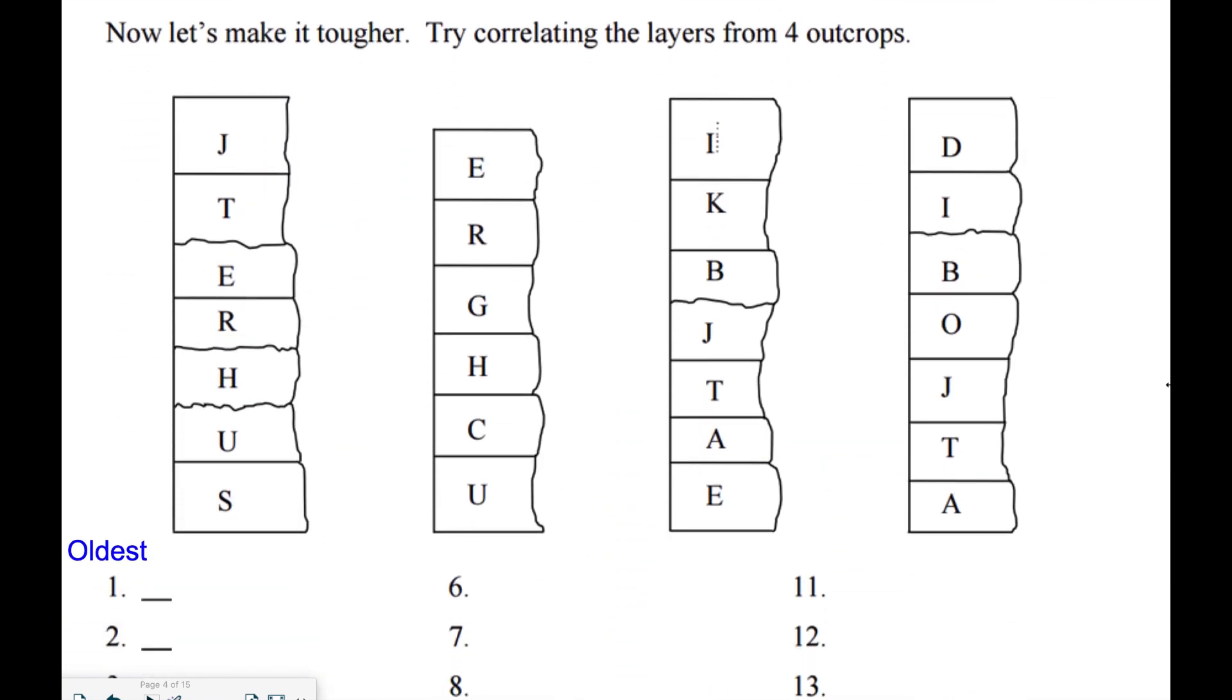Now here's a tougher one. Try this one on your own first and then come back and compare the answers. Hint, this one actually sort of spells a word or a couple words. Now in this example, I'm going to start by trying to find some layers that are similar between adjacent rock layers, and again I'm just going to connect some lines.